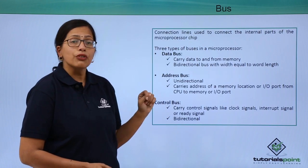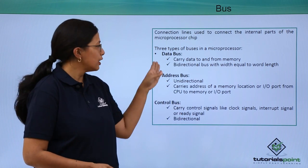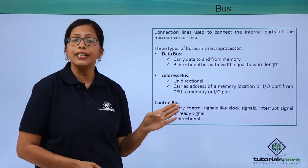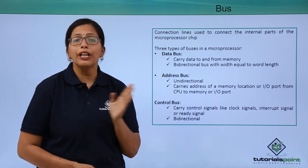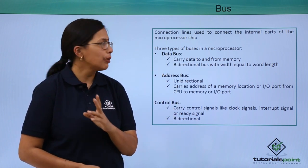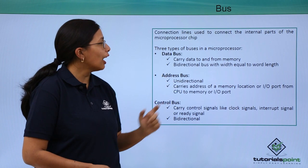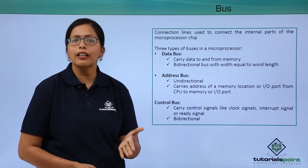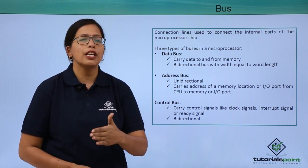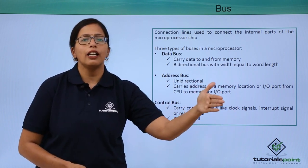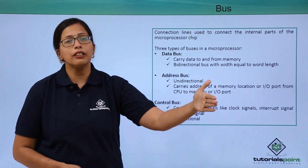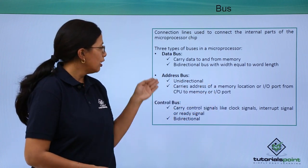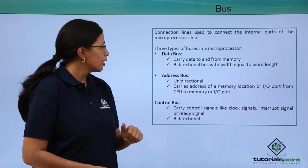There are three types of bus. The data bus carries data to and from the memory. It is bi-directional because it has to take data to the memory and then bring data back from the memory.